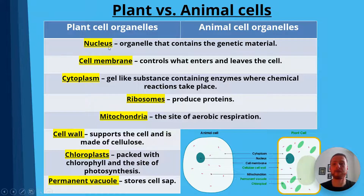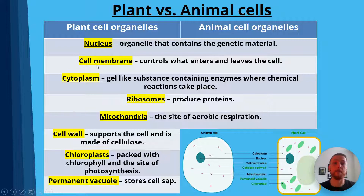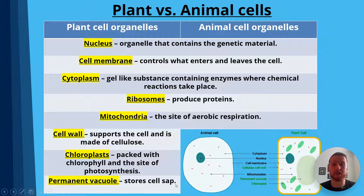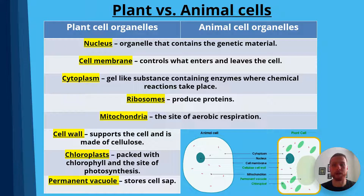If we look at the organelles they've both got in common, they both have a nucleus, which is the organelle that contains the genetic material in a cell. They both have cell membranes, which surrounds the cell and controls what enters and leaves the cell. And you can see in my diagram at the bottom, we've got the cell membrane around the outside of the cell, and then we've got the nucleus inside it. The cytoplasm is the gel-like substance containing enzymes where chemical reactions take place, and we can see in both diagrams at the bottom they've both got cytoplasm.